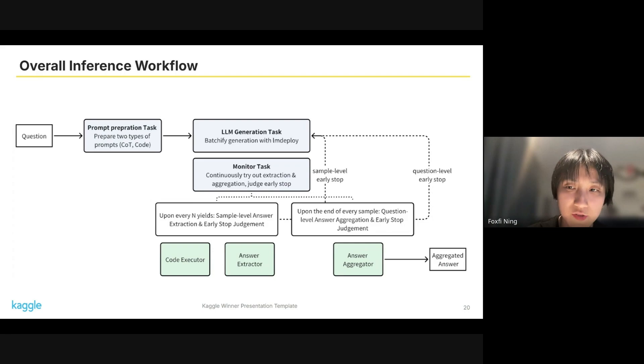In the meantime, we will continue to try to extract the answer from the streaming output of each sample, aggregating the answers of multiple samples, and judge whether to early stop some generations. The early stop will happen at two levels. First, we do sample-level early stop by checking upon every n tokens from the streaming generation iterator and judge whether to early stop the generation of the corresponding sample. Second, we will do question-level checking upon the end of every sample when we get an answer and judge whether to early stop the generation of all remaining samples of the current question.